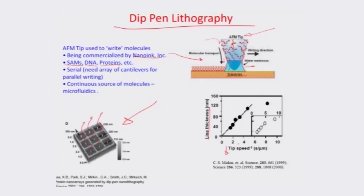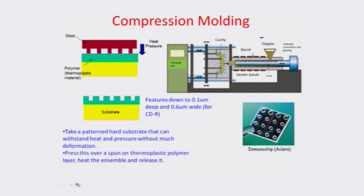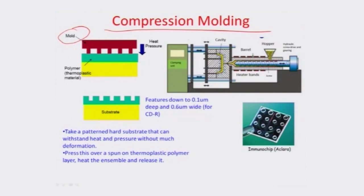Dip pen lithography is another soft lithography technique because it writes soft molecules onto the surface using an STM or AFM pen, creating microarrays separated by a resolution of about 200 to 300 nanometers. Let us now look at some other techniques apart from soft lithography available for polymer MEMS. One technique that comes to mind is compression molding. Essentially, there is a hard mold that can withstand temperature and pressure, and a thermoplastic polymer deposited on a substrate. Heat and pressure are applied through the mold to imprint it onto the thermoplastic material, and once the material is set, the mold is withdrawn.